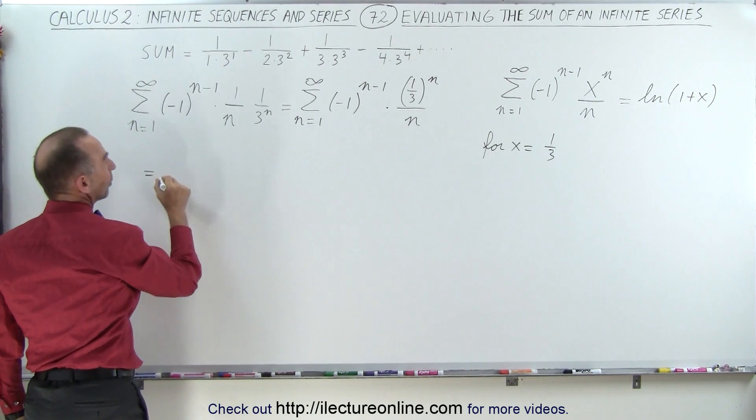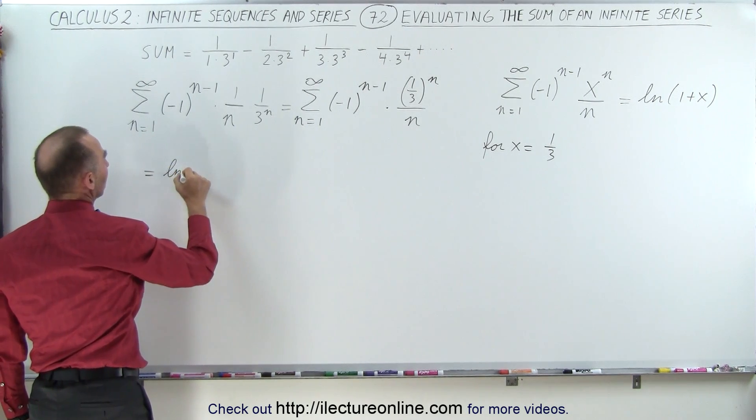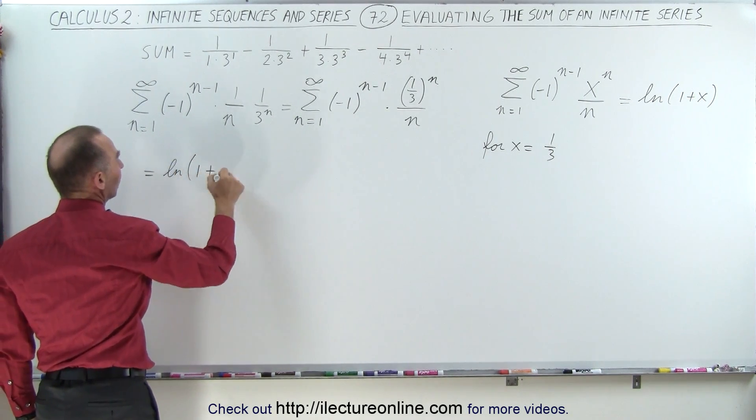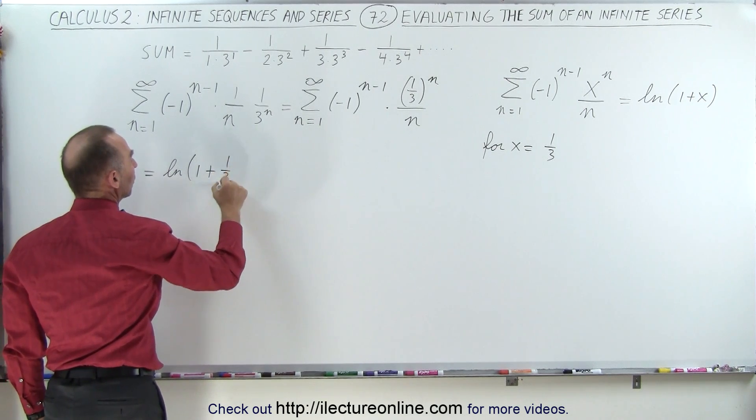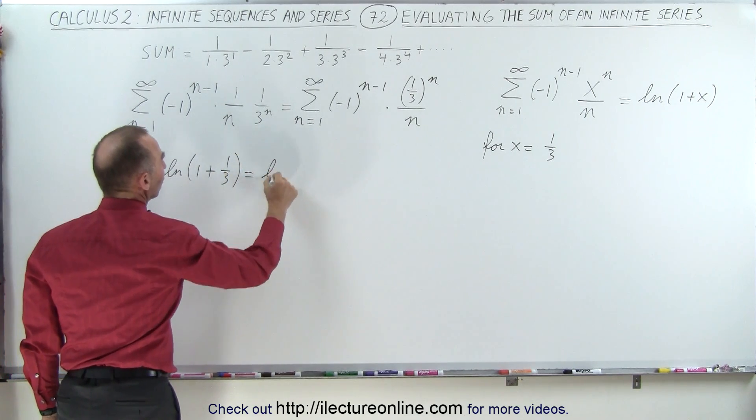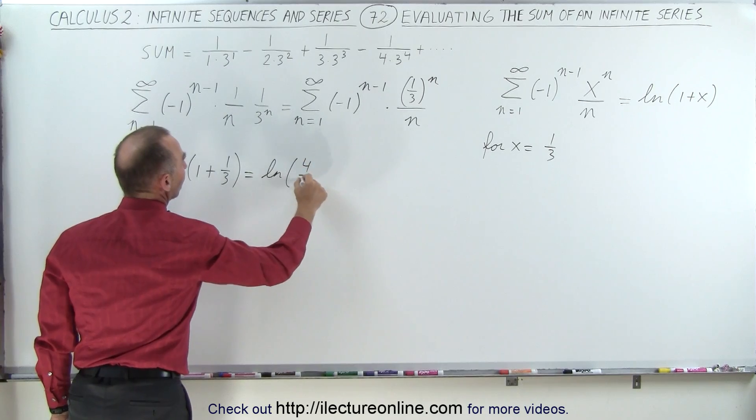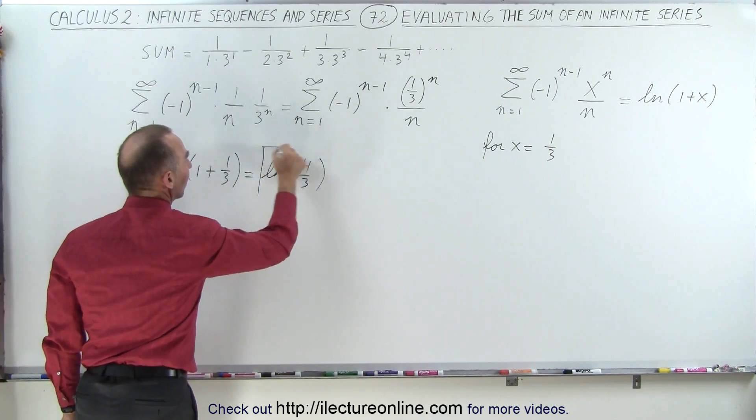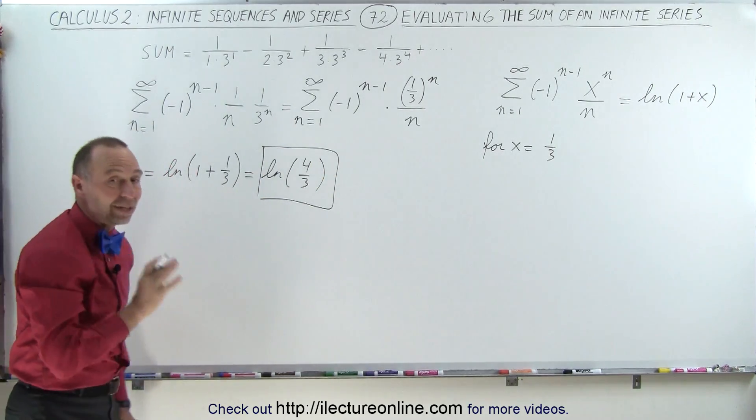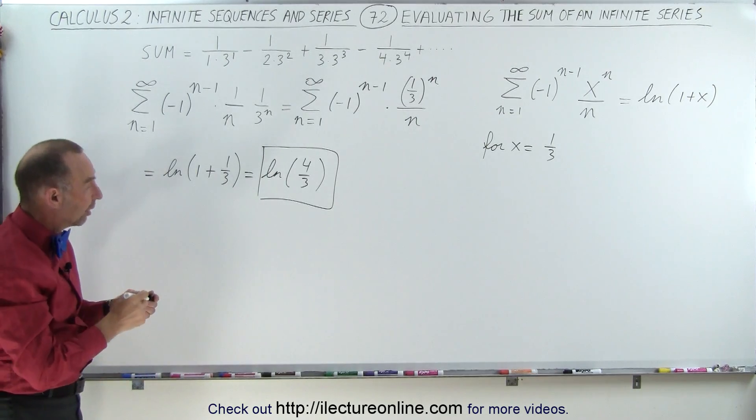So therefore, this is equal to the natural log of 1 plus, instead of x, we write 1 third, which is equal to the natural log of 4 thirds, which means that the infinite sum that we started with is actually equal to the natural log of 4 thirds.